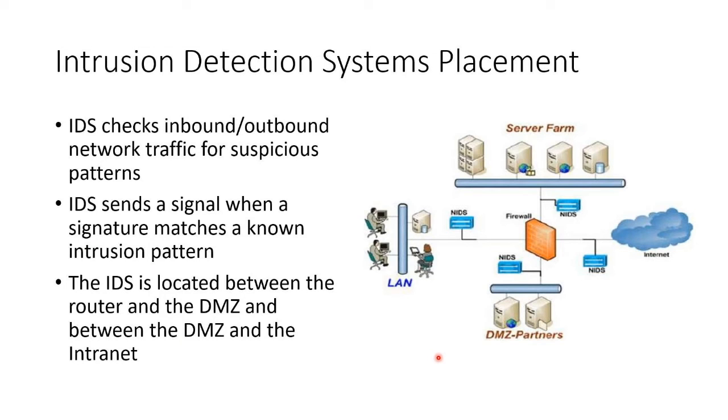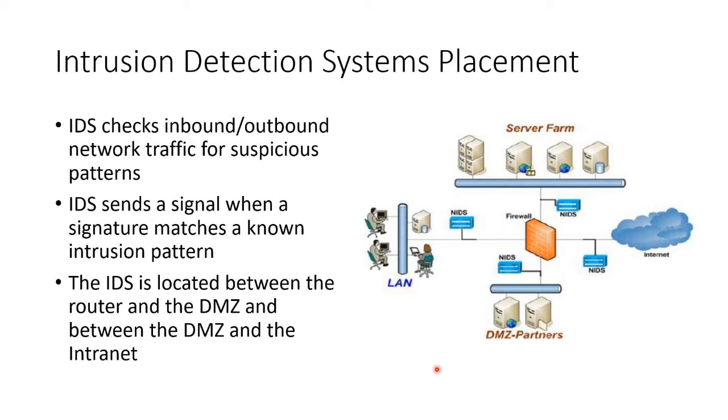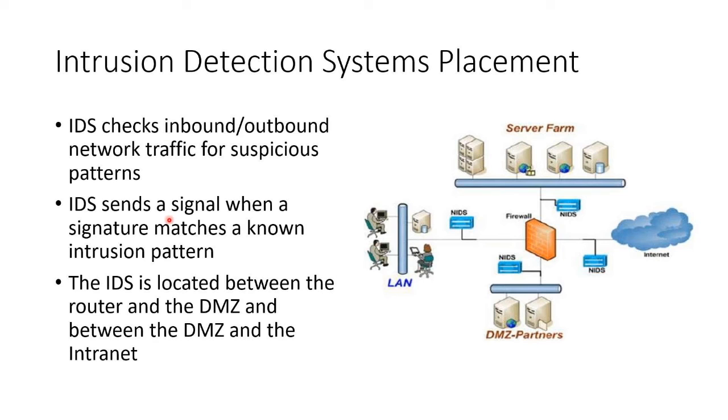Starting with intrusion detection — it is expected that you already have some sense of this from Network Plus. The whole point of IDS is to watch for suspicious traffic on either the network or a host. You put IDS sensors around the network that capture traffic and look for suspicious signatures and patterns, reporting them to a central dashboard. The IDS checks inbound and outbound network traffic for suspicious patterns and sends a signal when a signature matches a known intrusion pattern. It is located between the router and the DMZ, and between the DMZ and the intranet.